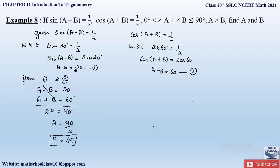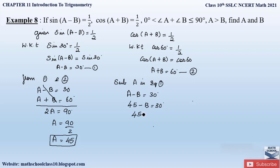Now we can substitute the value of A in either equation 1 or 2 to find the value of B. Substituting A in equation 1: A - B equals 30, so 45 - B equals 30. Rearranging, 45 minus 30 equals B, so B equals 15 degrees.